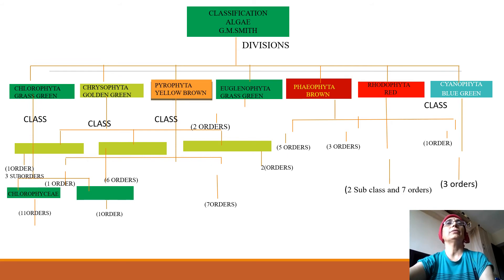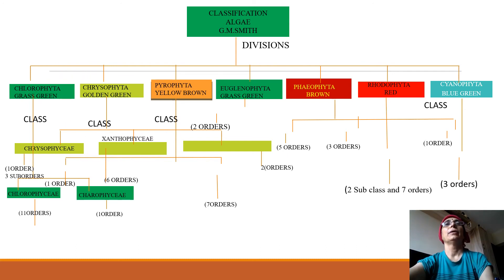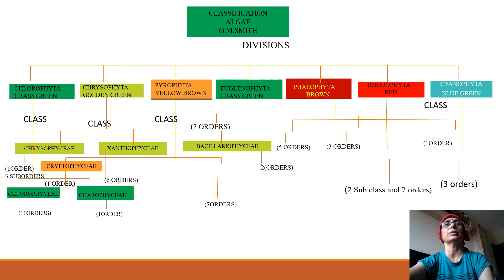Chlorophyta, the grass green algae, is further subdivided into two classes: Chlorophyceae and Charophyceae. Chlorophyceae comprises 11 orders and Charophyceae one order. Similarly, he divided Chrysophyta into three classes: Chrysophyceae, Xanthophyceae, and Bacillariophyceae. Chrysophyceae comprises one order and three suborders; Xanthophyceae has six orders, and Bacillariophyceae has two orders.